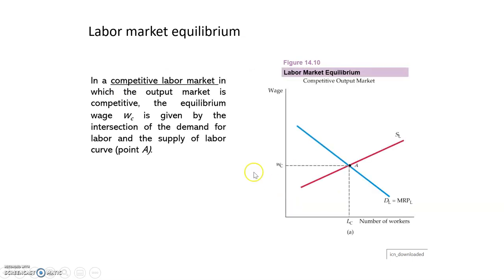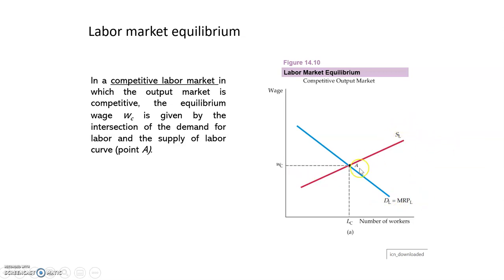In a competitive labor market where the output market is also competitive, the equilibrium wage is given by the intersection of the demand for labor and the supply of labor. At point A in the graph, you have the market wage and the number of workers employed. The demand curve represents the marginal revenue product of labor, and the supply curve shows the number of workers willing to work at each salary level.